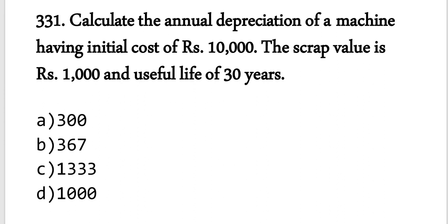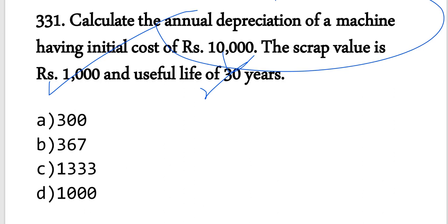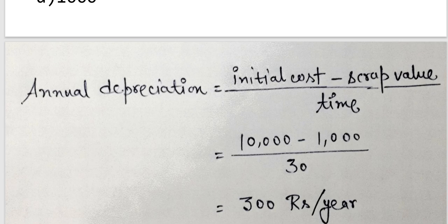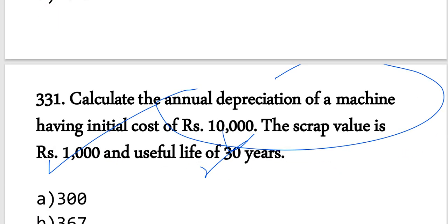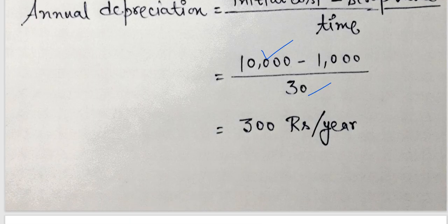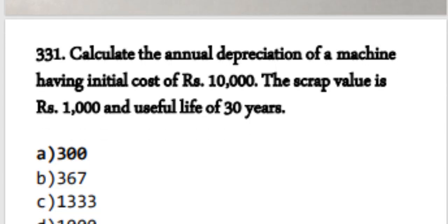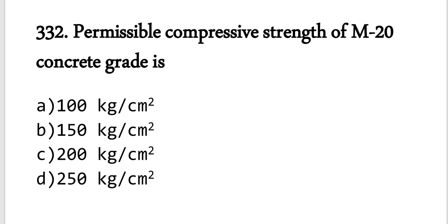Next, estimating and costing question: Calculate the annual depreciation of a machine having an initial cost, a scrap value, and a useful life of 30 years. The formula for annual depreciation is: initial cost minus scrap value divided by useful life. So 10,000 minus 1,000 divided by 30 equals 300 rupees per year. Option A is correct.